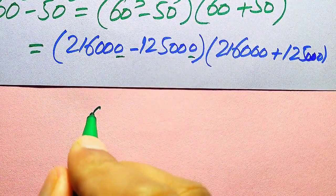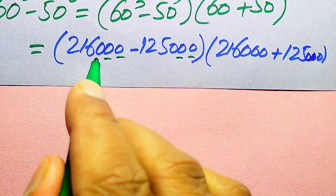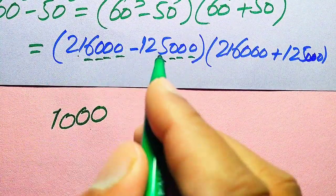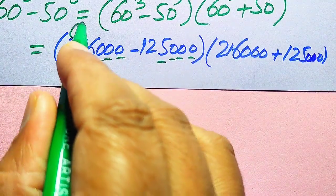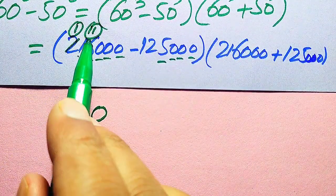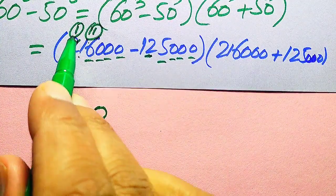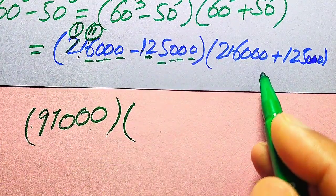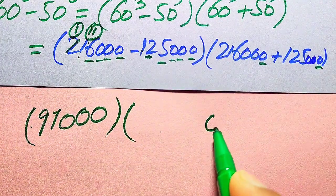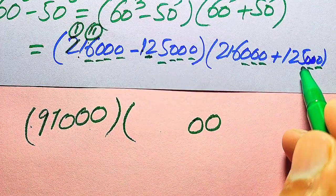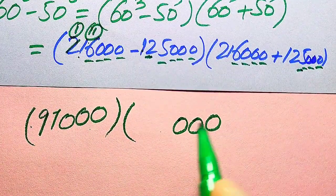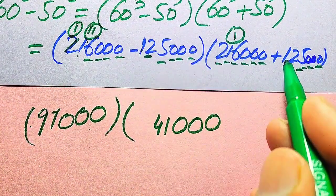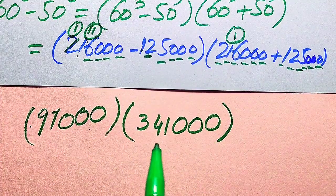For the subtraction 216,000 − 125,000: the three trailing zeros give 0, 0, 0. Then 6 minus 5 is 1. For the next digit, 1 cannot be subtracted by 2, so we borrow — making it 11 minus 2 equals 9, and 1 minus 1 equals 0. Result: 91,000. For the addition 216,000 + 125,000: 6+5=11, write 1 carry 1; 1+2+1=4; 2+1=3. Result: 341,000.